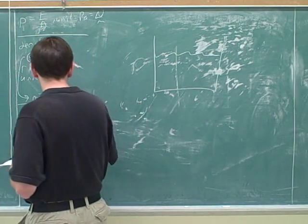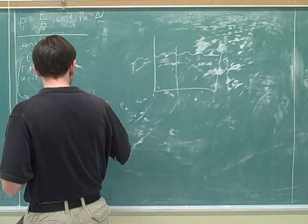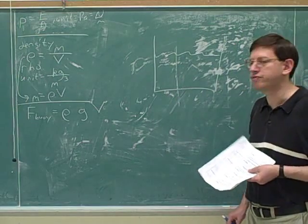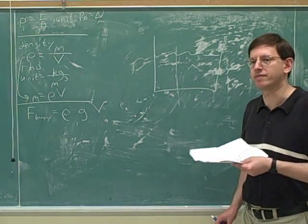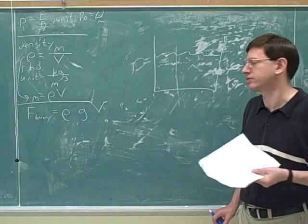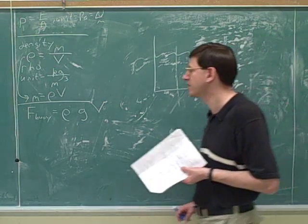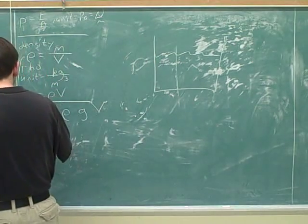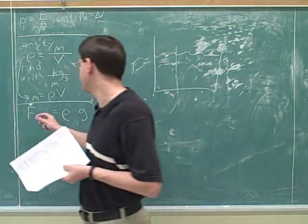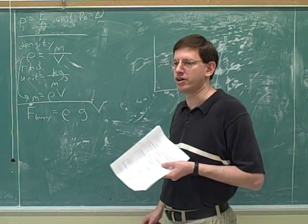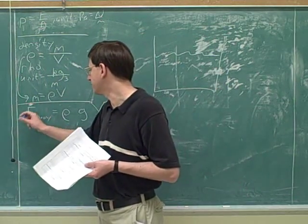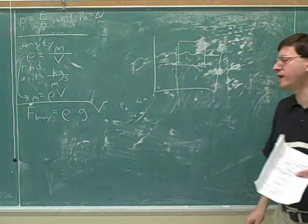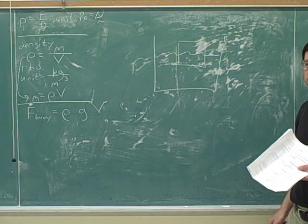The formula for the buoyant force is density times g times V. Every time we learn a new force, we have to learn a new formula. For example, weight is m times g, kinetic friction is mu times the normal force, and the spring force is k times x. So now we have our last new formula for the buoyant force. We'll put a dot here to show this gives us only the magnitude of the buoyant force — we'll figure out the direction on our own.